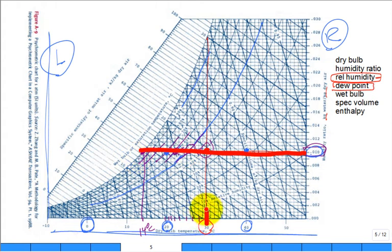So actually, a line of constant omega is also a line of constant dew point temperature. Just like we talked about, this is a line of constant what? Dry bulb. And this is a line of constant what? Relative humidity. Now we know how to do lines of constant dew point. Everything along that line has the same dew point temperature.